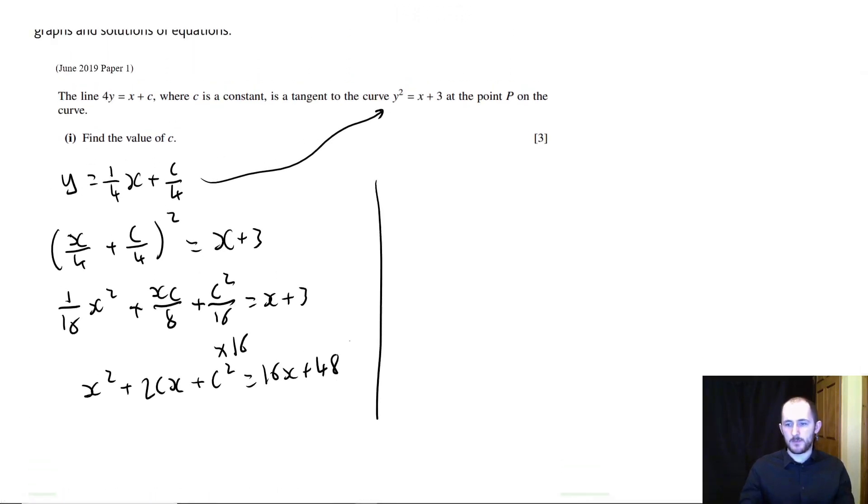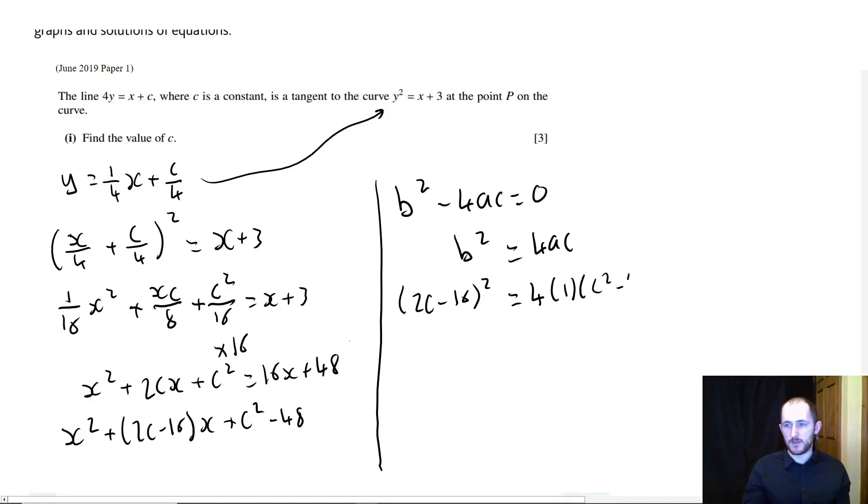But this is completely unnecessary. You don't need to actually do that. And let's go back up. Let's split that in half. Move everything over to the left-hand side. So we're going to have x squared plus, and then we're going to have 2c minus 16x, and then plus c squared minus 48. And again, we can use b squared minus 4ac equals 0. So we can then have 2c minus 16 squared equals 4 times 1 times c squared minus 48.